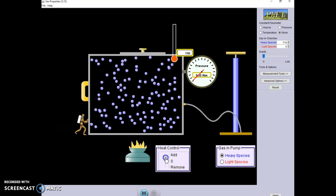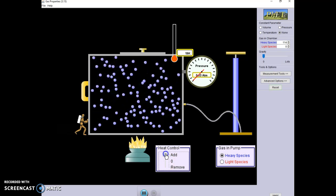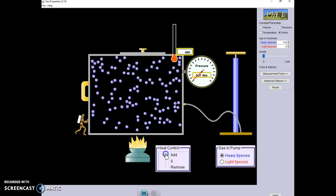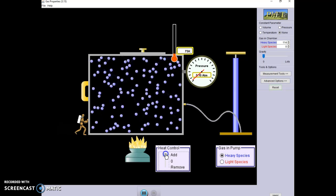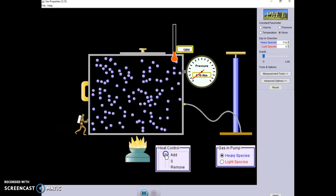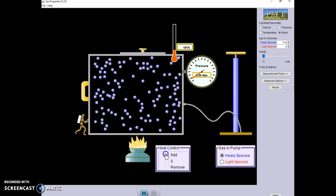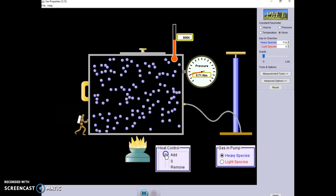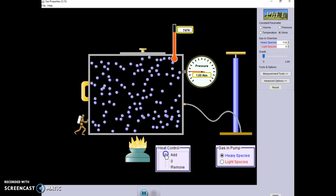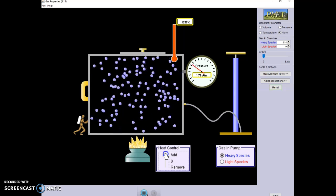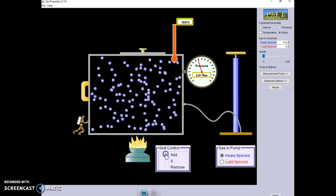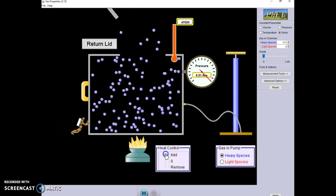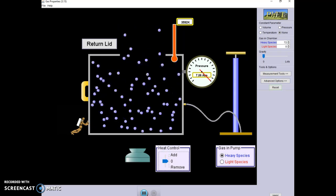What happens when we add heat? You will have to click and hold. It does not stay put. You have to keep the mouse going there. What's happening? You can see the particles moving. What is happening to the pressure? What is happening to the temperature? What is happening to the volume? And we have popped the lid.